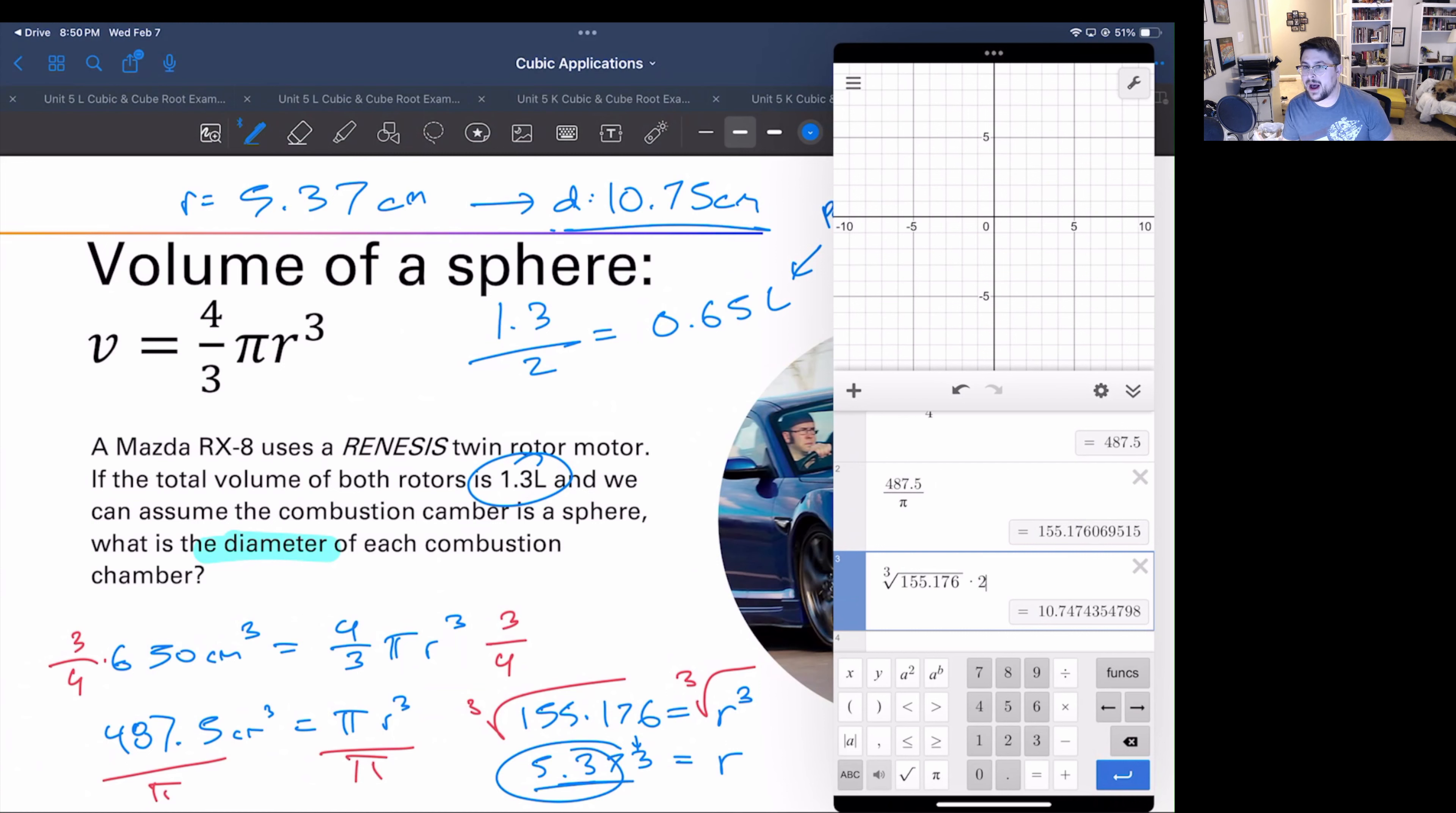So diameter is 10.75 centimeters, roughly about, let's see, that would be four inches wide. So about this far is the size of your cylinder if we're assuming the whole thing is going boom.